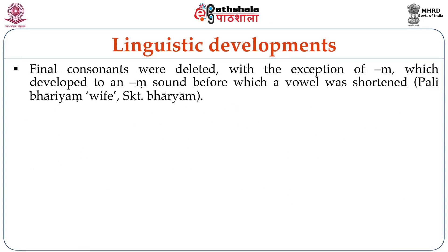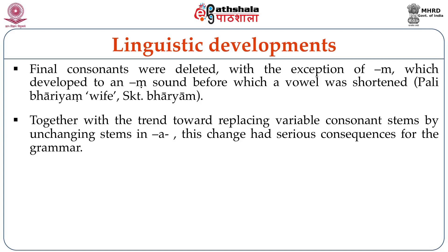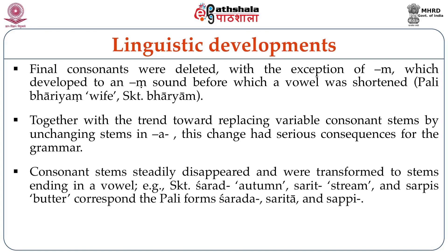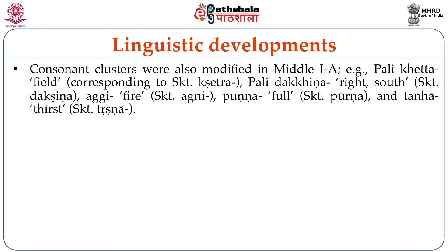Final consonants were deleted, with the exception of m which developed to an anusvara before which a vowel was shortened — in Pali bhariyam corresponds to Sanskrit bhariyam. Together with the trend toward replacing variable consonant stems by unchanging stems in A, this change had serious consequences for the grammar. Consonant stems steadily disappeared and were transformed to stems ending in a vowel. For example, Sanskrit sharad, sarith, shreem, sarpis correspond to Pali forms sharada, saritha, sappi. Consonant clusters were also modified in Middle Indo-Aryan.